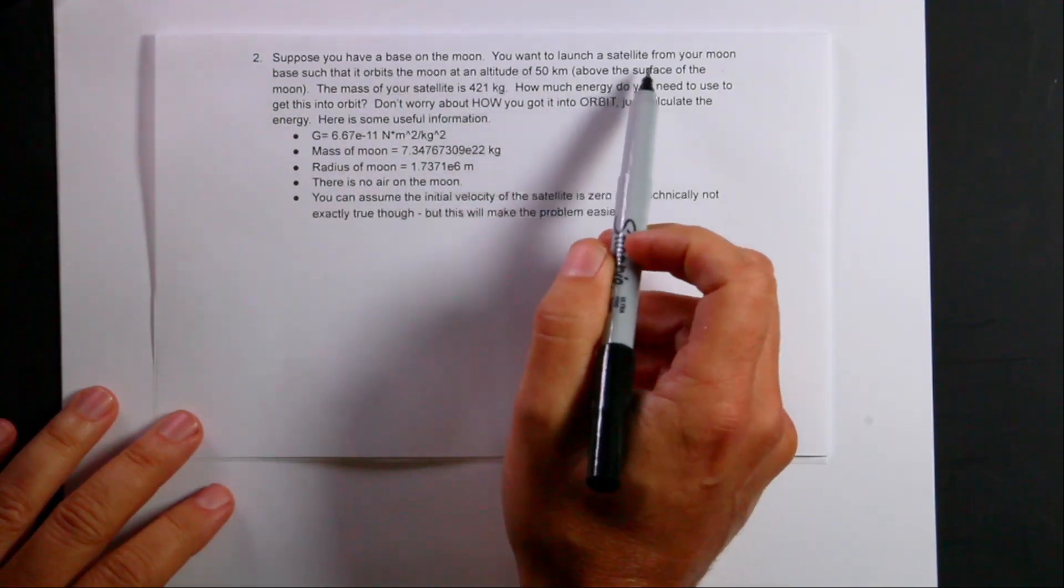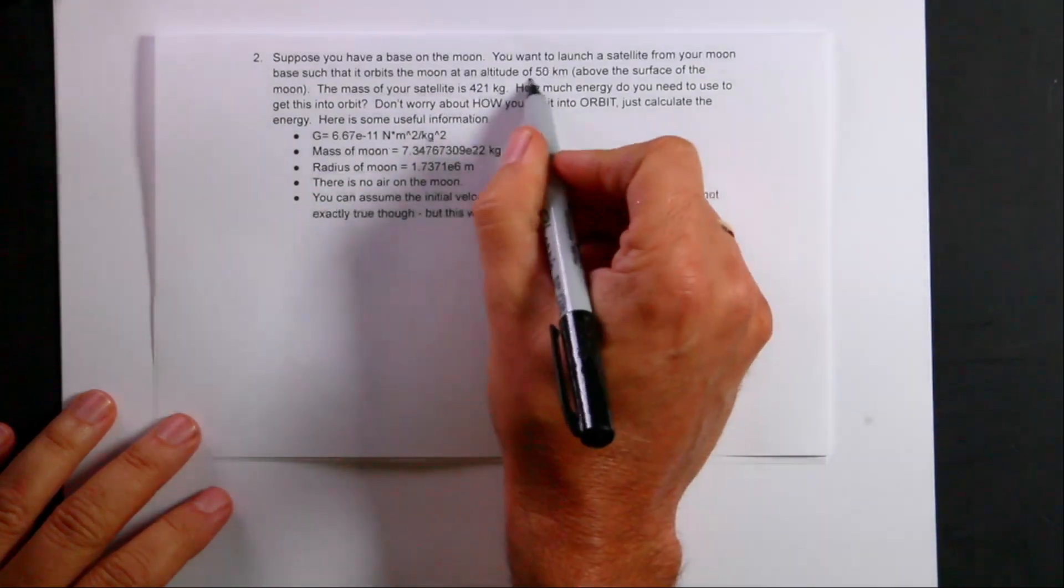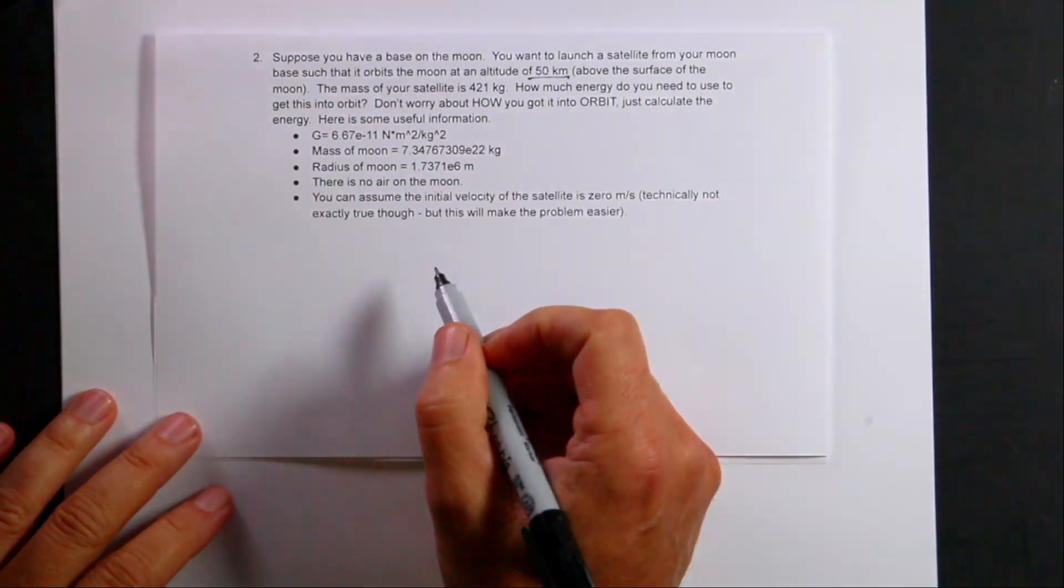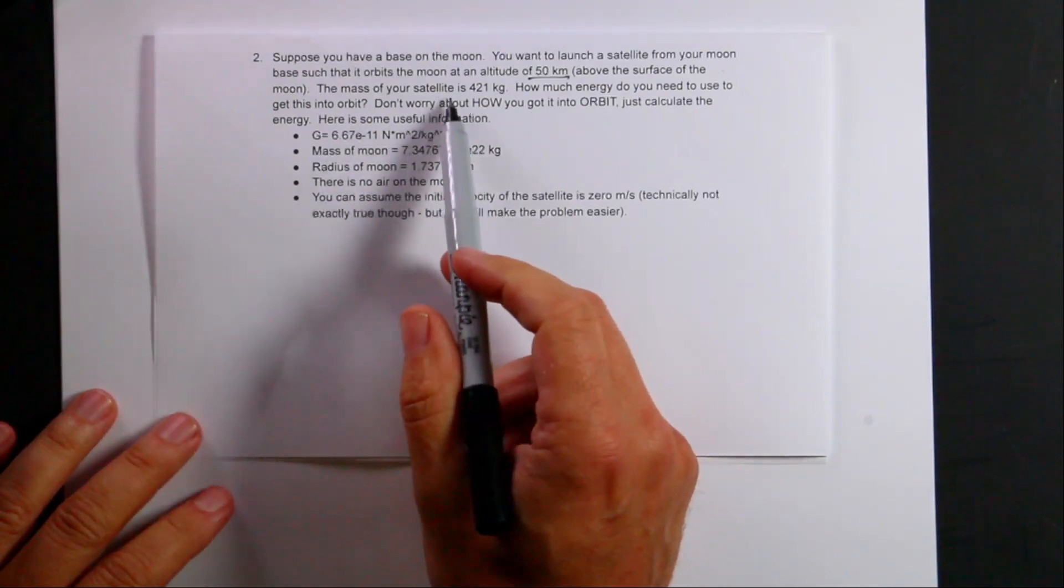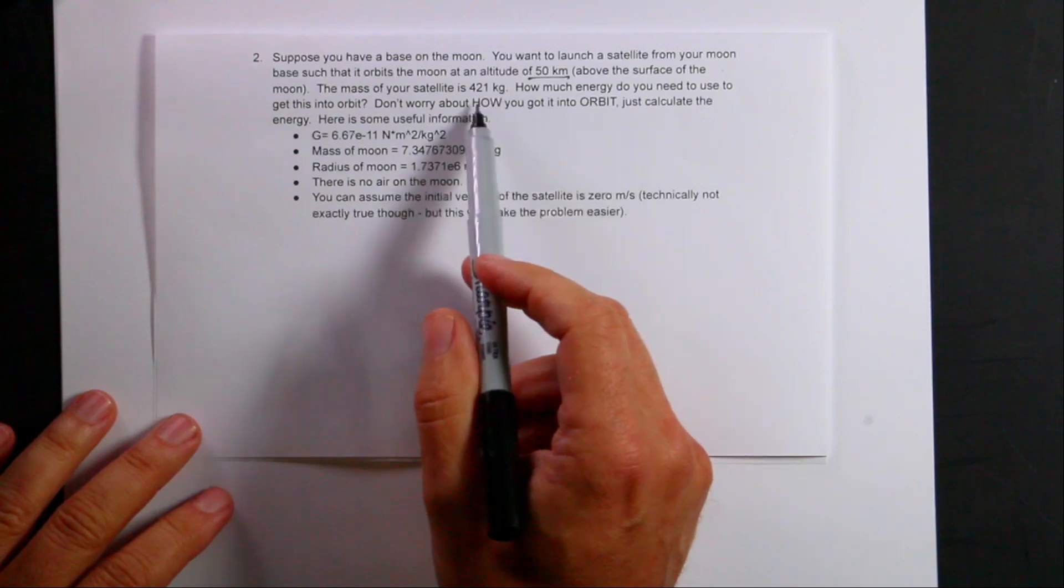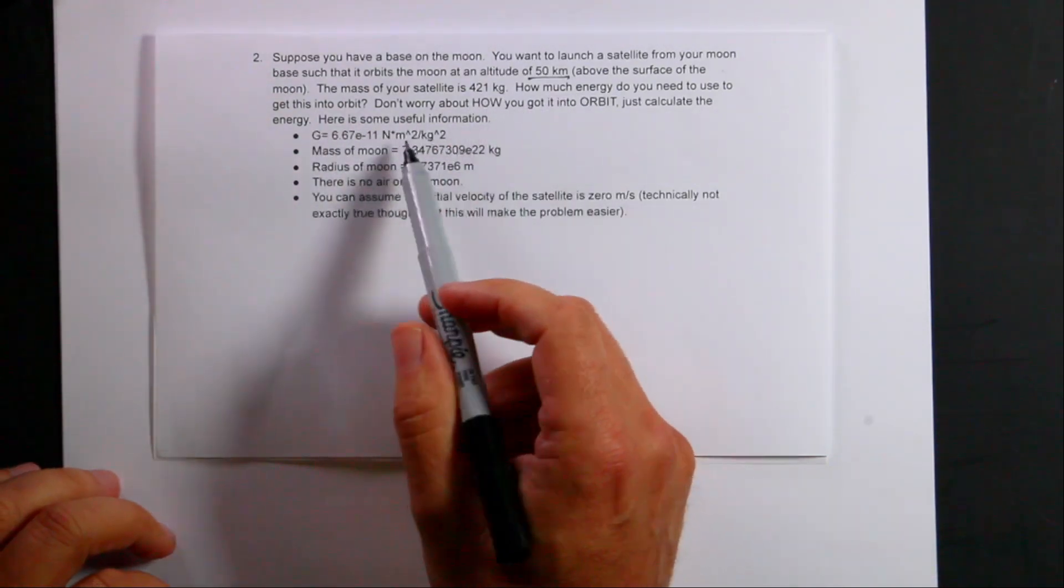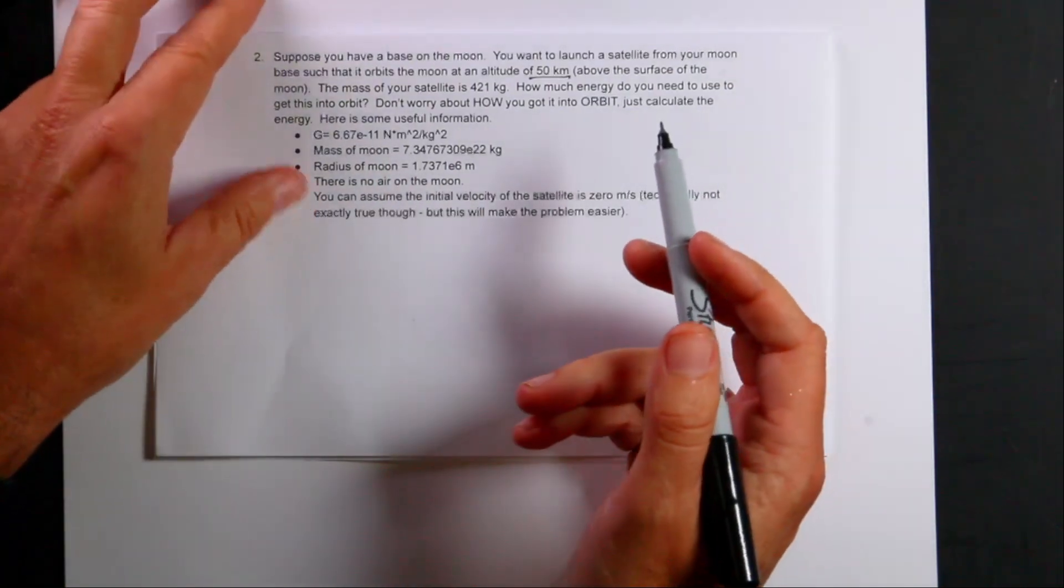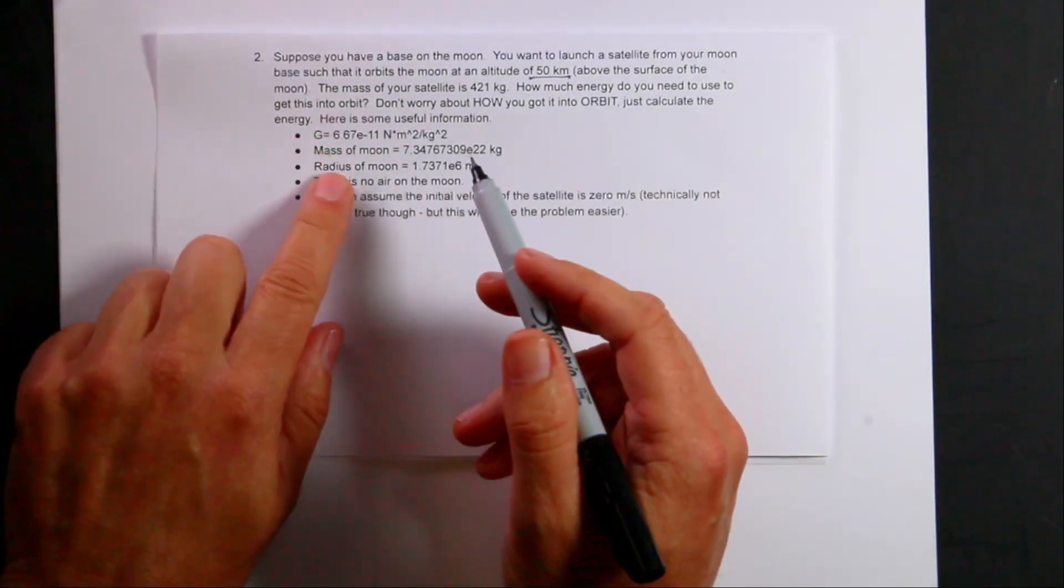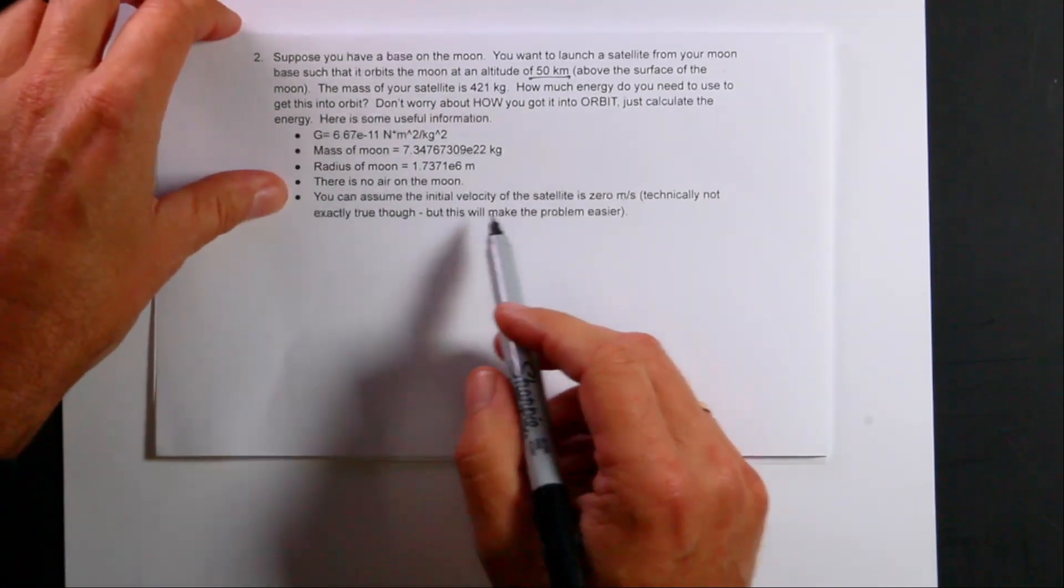You want to launch a satellite from your moon base such that it orbits the moon at an altitude of 50 kilometers above the surface of the moon. The mass of the satellite is 421 kilograms. Hint, it doesn't matter. Well, I guess it does. How much energy do you need to get this into orbit? Don't worry about how you got into orbit. Just calculate the energy needed to do that. So then I get the mass of the moon, the radius of the moon, no air, and then we'll talk about the last one. You can assume the initial velocity is zero. So let's draw a picture.